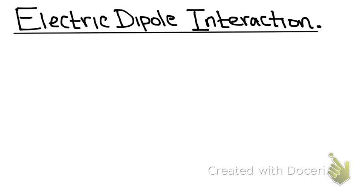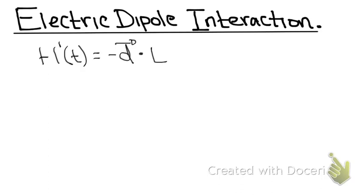Let's start with the Hamiltonian. The electric dipole time-dependent Hamiltonian is H₁(t) = -d · E, where d is the electric dipole moment and E is the time-varying electric field. This is the time-dependent Hamiltonian for the electric dipole interaction.